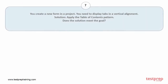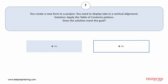Question number 7. You create a new form in a project. You need to display tabs in a vertical alignment. Solution: Apply the table of contents pattern. Does the solution meet the goal? Your options are: A. Yes. B. No. The correct answer is option B.